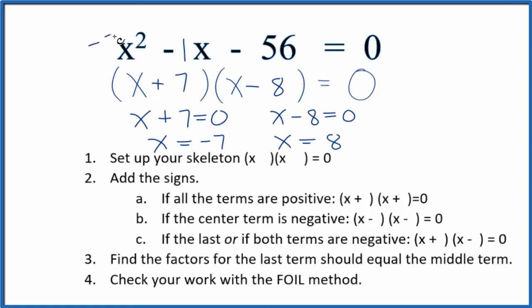Now if we put minus 7 in for x and we work the equation out, all of this will equal 0. Likewise if we put 8 in for x and we work this out, all of it is going to equal 0. So these are the solutions for our equation.